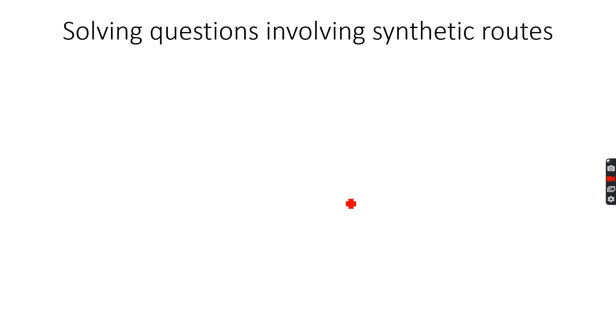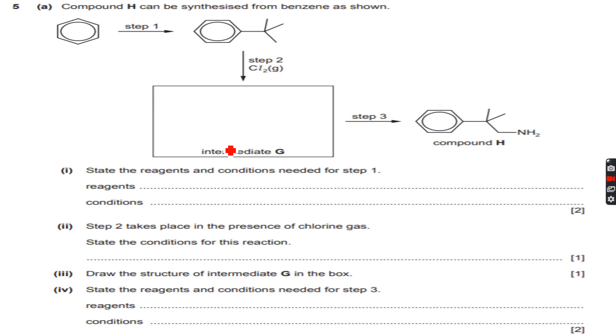So we have this question. From benzene, we're going to this compound, and then in step two we're adding some chlorine to it. In step three, we're making this. So the final product is compound H, the initial reactant is benzene. We go these many steps to get to compound H. Now let's see what's happening.